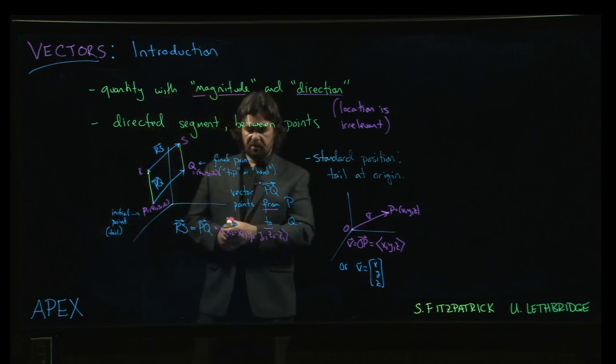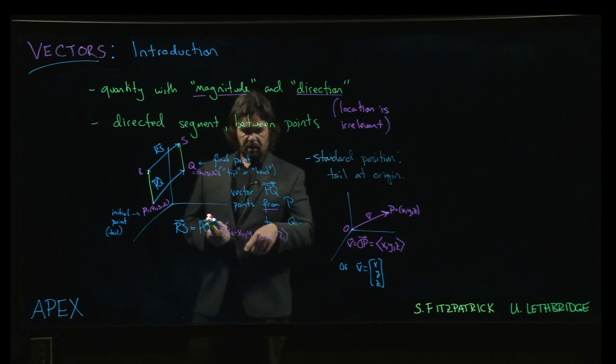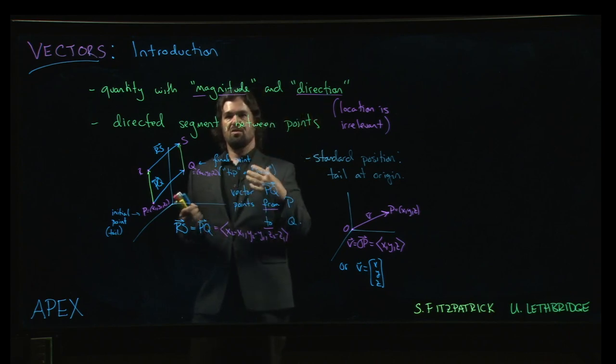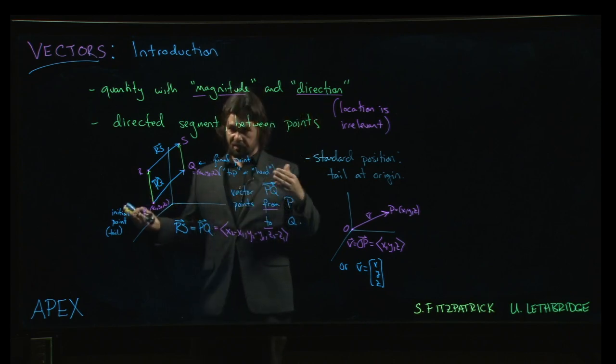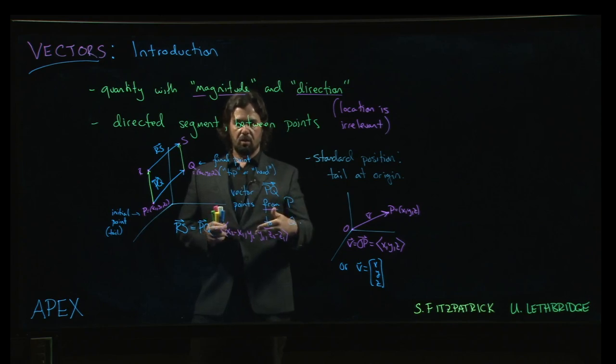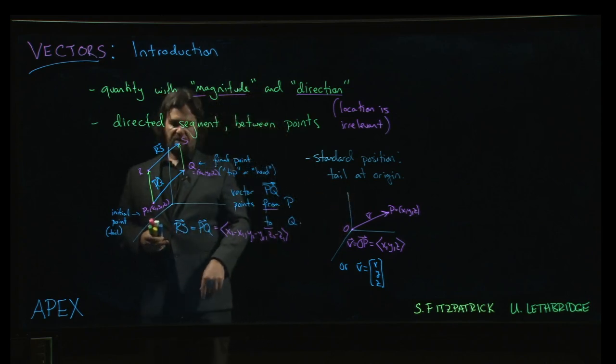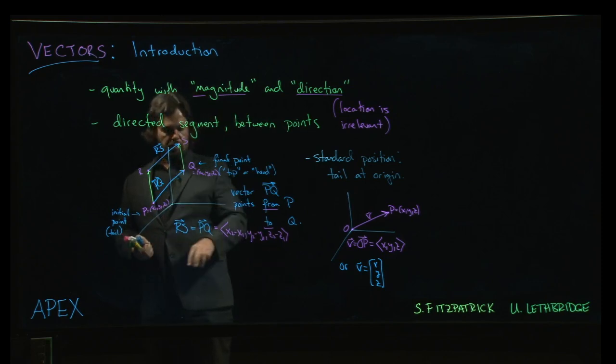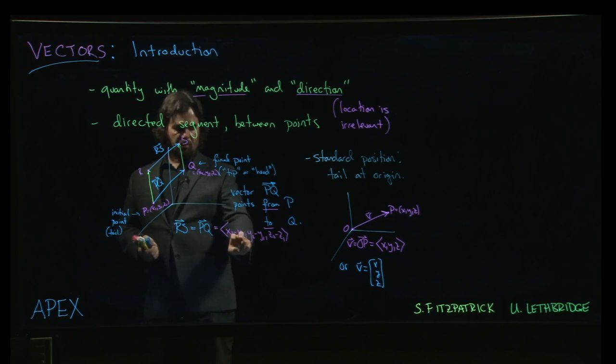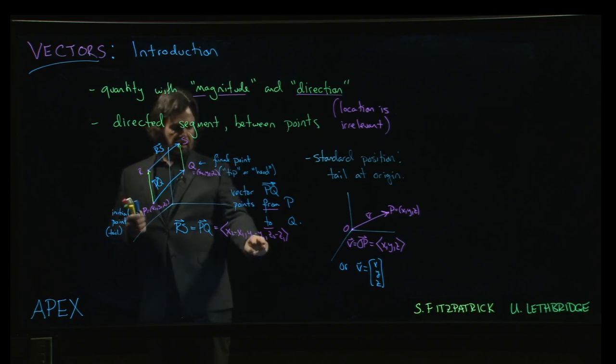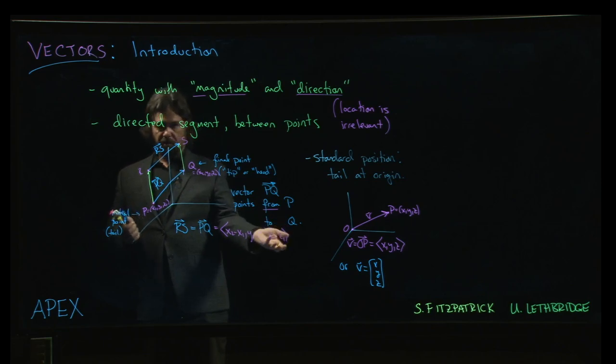And one way to think about this is these numbers, think of a vector as directions. Directions in the sense of how to get from point P to point Q. You need to know which way you're going and how far you should go. So this says, well, if you start at the point x1, y1, z1, and you change the x coordinate by the amount x2 minus x1, so if you add that to x1, then of course you get x2. Take y2 minus y1, add it to y1, you get y2, and same for z.